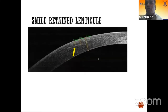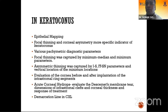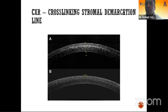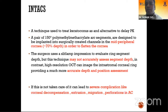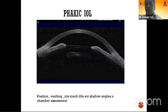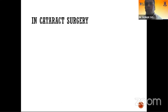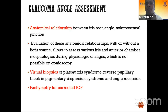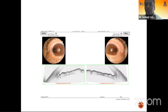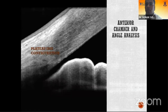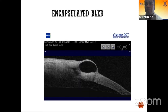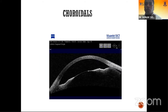A retained SMILE lenticle can be manually removed based on extent and depth of involvement. The stromal demarcation line after cross-linking can be visualized, along with pachymetric parameters and epithelial mapping. Intacs segments help monitor postoperative decompensation, migration, and perforations. In phakic IOL assessment, vaulting, shallowing of angles, and positioning are evaluated. In cataract surgery, FACO wound architecture and capsular distension syndrome — with fluid behind the IOL — can be seen. For glaucoma, angle assessment includes virtual biopsy of plateau iris, pachymetry for IOP, narrowing of angles, plateau iris configuration, reverse pupillary block, various angle-opening distances, and bleb characteristics.